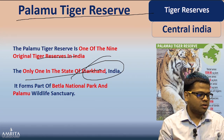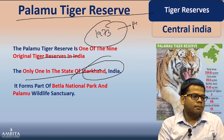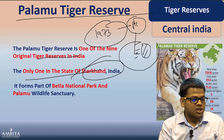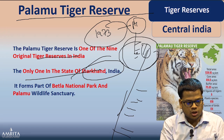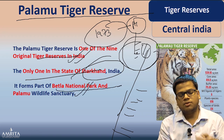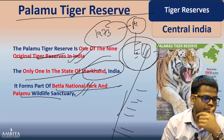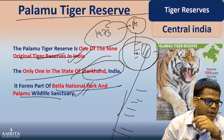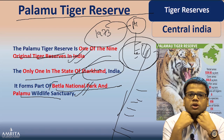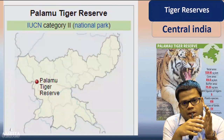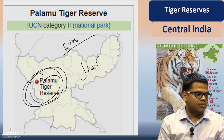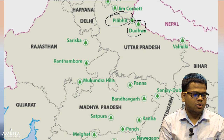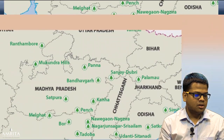Palamau Tiger Reserve in Jharkhand is one of the original nine tiger reserves declared in 1973 under Project Tiger. It is significant to remember that it was among the first nine. The reserve forms part of Betla National Park and Palamau Wildlife Sanctuary. Remember that Betla National Park is in this region. The location is in Jharkhand — maps of Bihar and Jharkhand can look similar, so be careful.